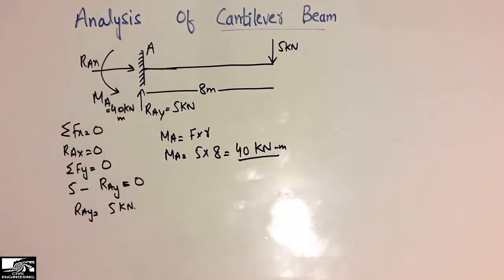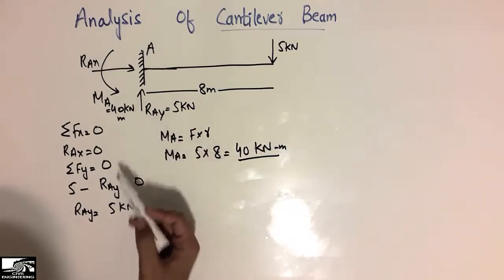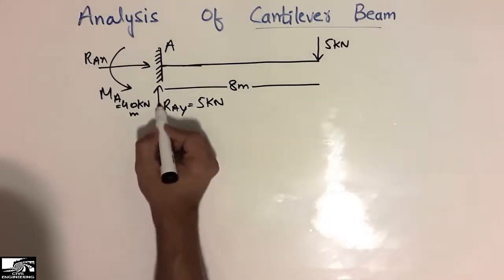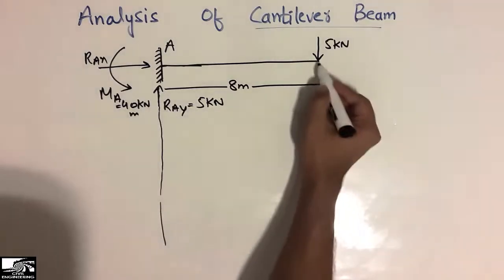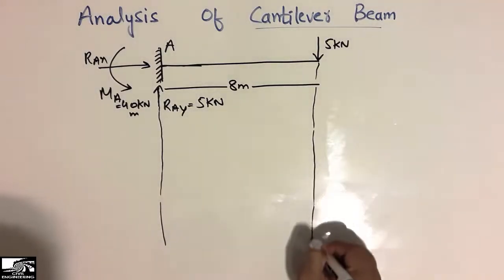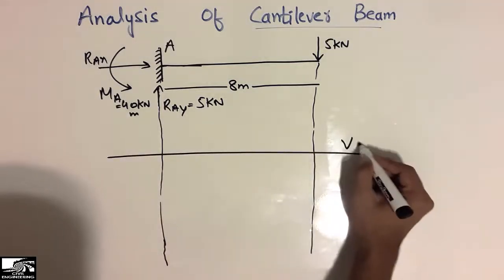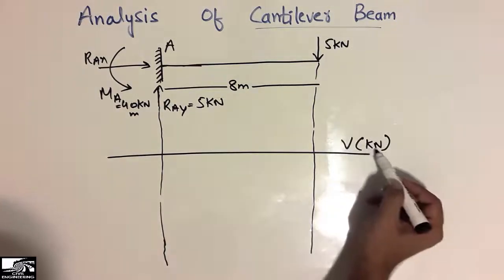Now we want to draw the shear force and bending moment diagram for this cantilever beam, which has a vertical reaction of 5 kN and a moment of 40 kN·m. To draw the shear force diagram, I will first make reference lines. The shear force is in units of kilonewtons since the load is also in kilonewtons.